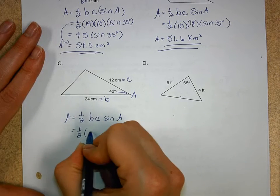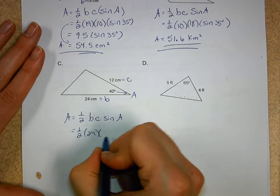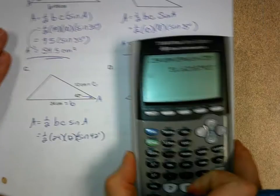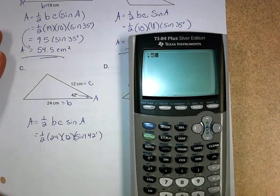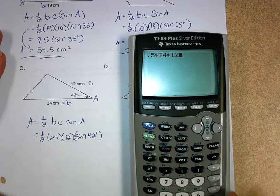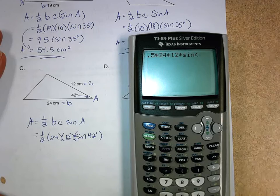I get one half, B is going to be 24, C is 12, and then I get the sine of 42 degrees. So let's punch that one into our calculator. 0.5 for one half times 24 times 12 times the sine of 42.